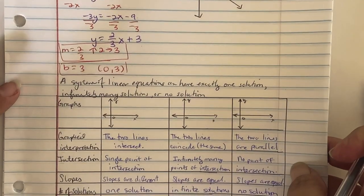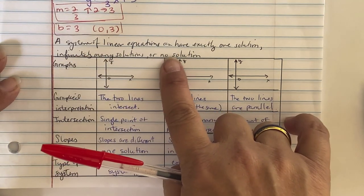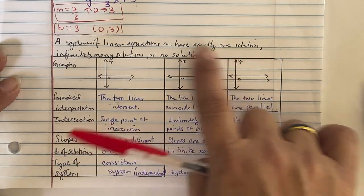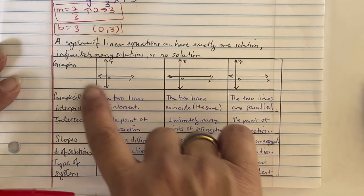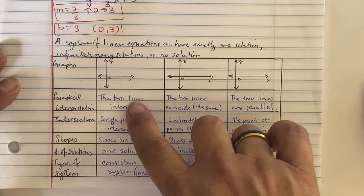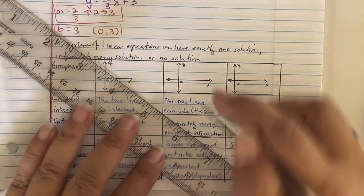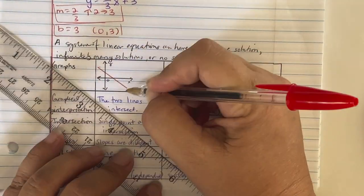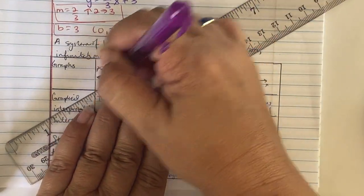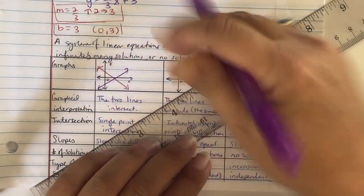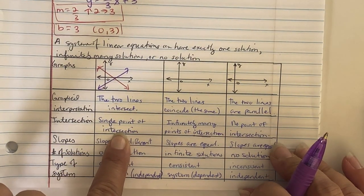Something to remember: a system of linear equations can have exactly one solution, infinitely many solutions, or no solution. Graphically, a system with one solution has one point of intersection, meaning the two lines cross — they are intersecting lines with different slopes.